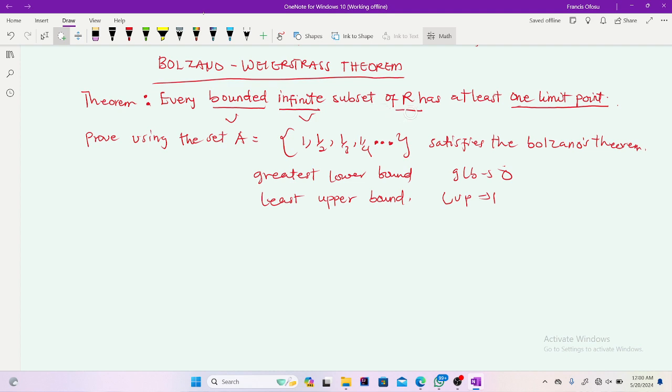Then is it a subset of R, real numbers? Yes, it is. So it's satisfied. Then we come to what the theorem is saying. It has at least one limit point, at least one. So there is no way we have a bounded infinite subset of R which will have no limit. It has a limit point. So now, what is the limit point of this?